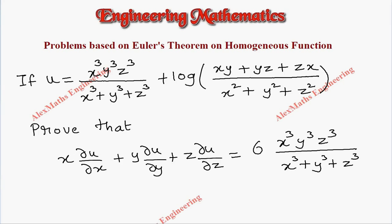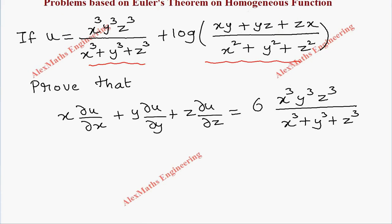Hi students, this is Alex. In this video we are going to discuss a problem based on Euler's theorem for homogeneous functions. The function given is u, which is made up of two parts: one is x³y³z³ divided by x³ + y³ + z³, and the other is log of (xy + yz + zx) divided by x² + y² + z². These two terms have different degrees, so let's take them separately as v and w.